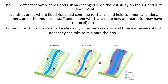The CSLF dataset can help community leaders, planners, and other municipal staff understand and show where flood risk has changed since the last study on the one percent and the zero point two percent chance event. It identifies areas where flood risk could continue to change and helps community leaders, planners, and other municipal staff understand which areas are now at greater or may have reduced risk. With this information, community officials can also educate newly impacted residents and business owners about steps they can take to minimize their risk from this natural hazard.